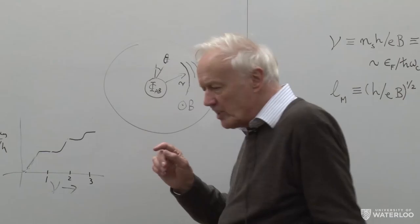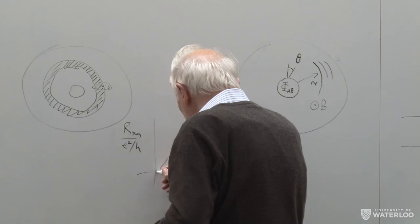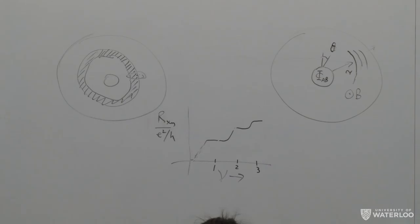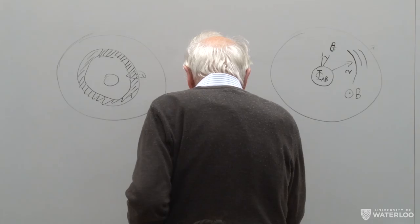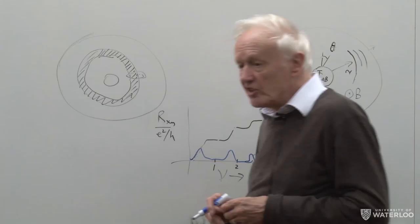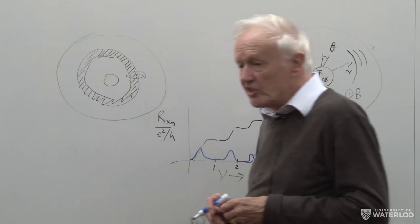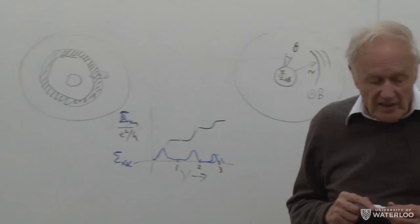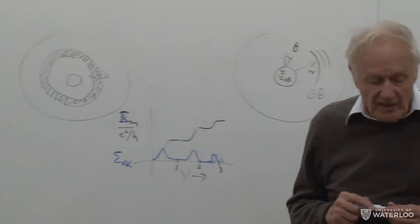The integral quantum Hall effect consists of two pieces of information. One is that R_xy behaves in a quantised step-like way. The other, equally important, is that σ_xx is non-zero exactly where you don't get quantisation of the Hall conductance. When you're on the quantum Hall plateau, your chemical potential lies within the region of localised states, so there are no free states available near the Fermi surface, and by the usual textbook arguments the longitudinal conductance is zero. When your Fermi level is in the extended region, you get a finite conductance.